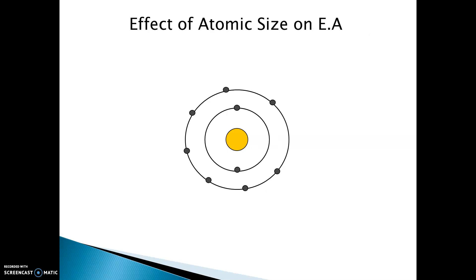Now, the effect of atomic size. For example, this is the structure of a fluorine atom having seven electrons in its valence shell, and it has only one electron less than the nearest noble gas configuration, so it will accept an electron to complete its octet and becomes fluoride ion.